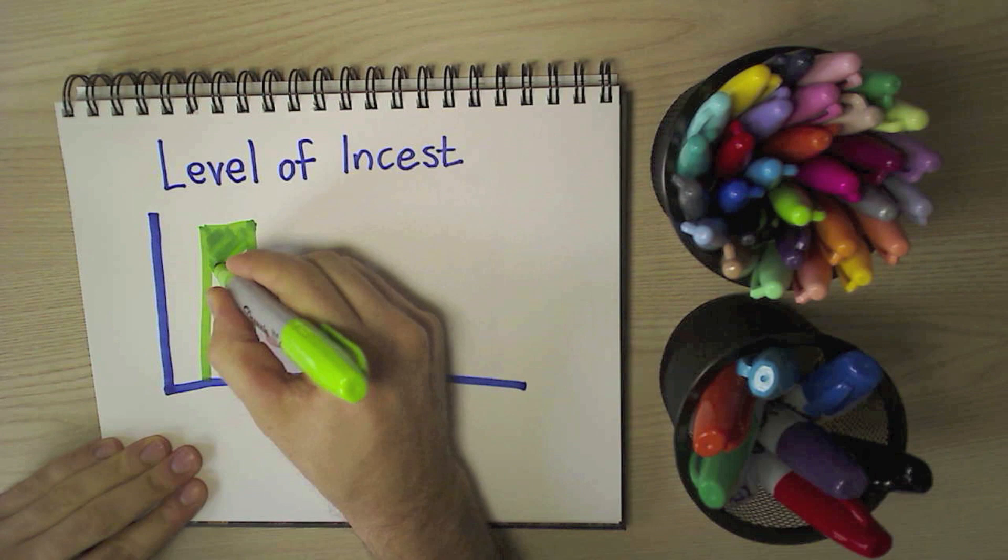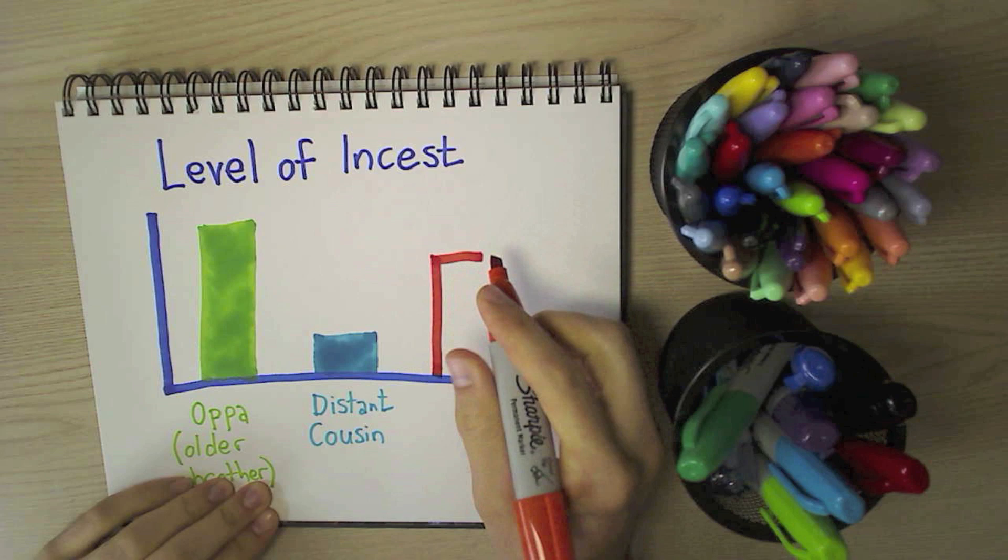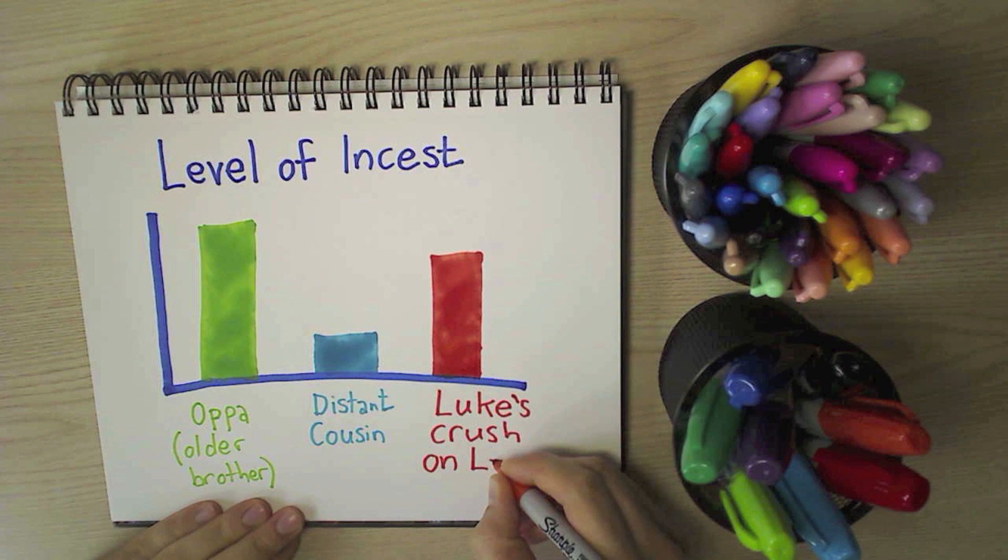Now in Korea, that word 'Opa' is something that fangirls will use to refer to K-pop stars, and it's also a term of endearment that a girlfriend might use to refer to her boyfriend, which seems a little bit incestuous to me. I mean, I did once accidentally date a distant cousin, but it was a distant cousin. I wasn't dating an older brother.